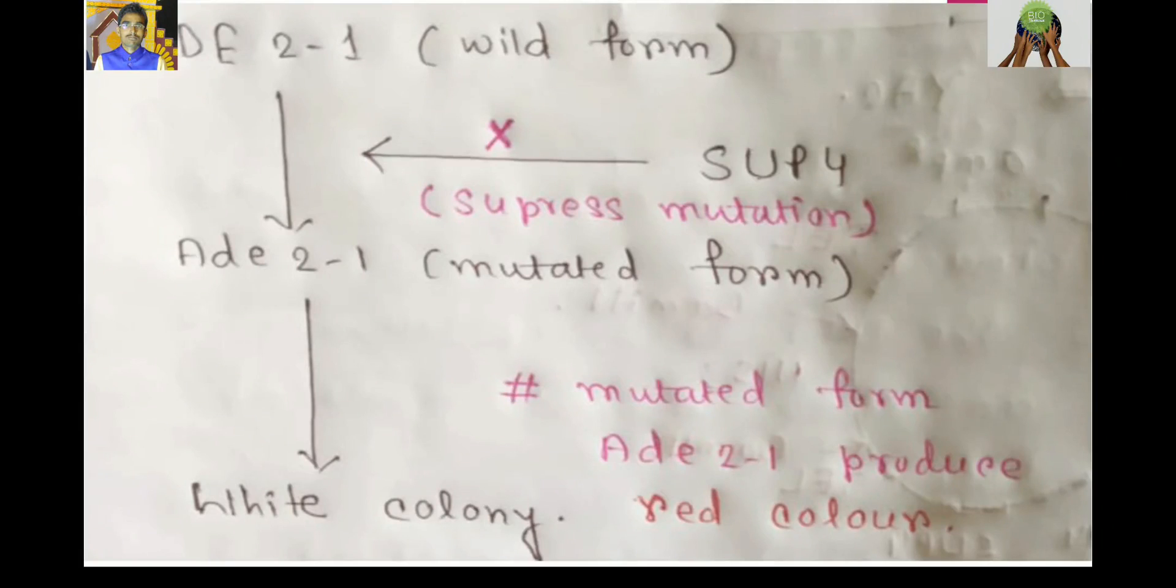In the figure, you can see, when SUP4 is present, it suppresses the mutated form and produces white colony. As the ADE2 mutated form has a tendency to produce red intermediate. But when SUP4 is present, it can't express itself and then white colony forms.